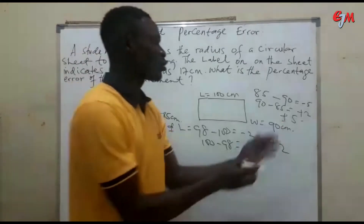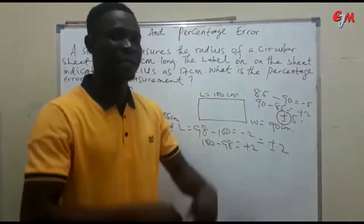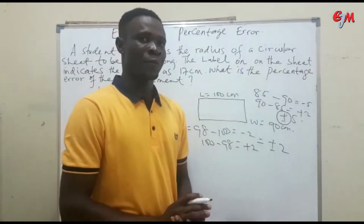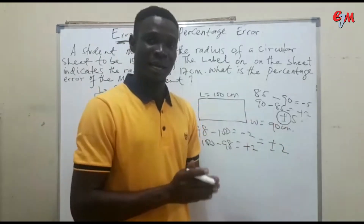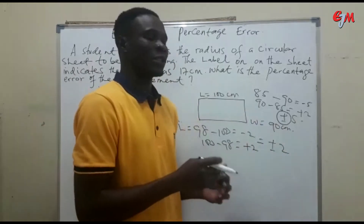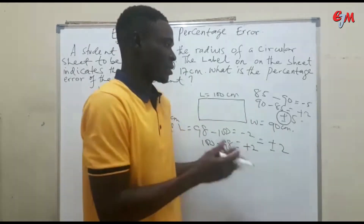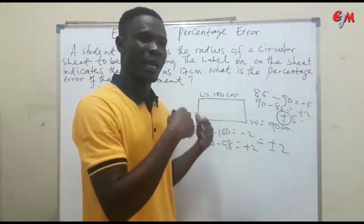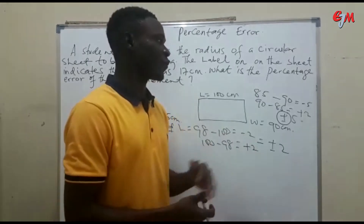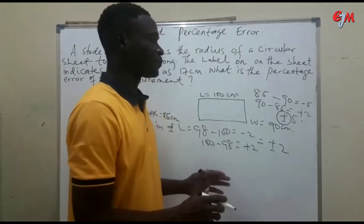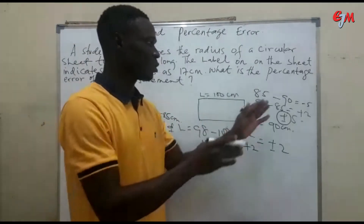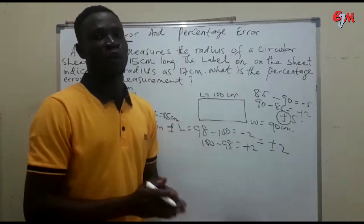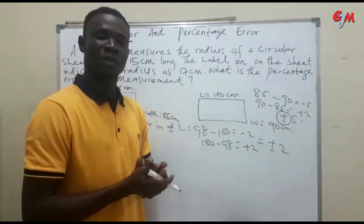Our concern now is not whether this is plus or minus — our concern is the amount of error made in the measurement. The sign is important in science, particularly in chemistry or physics, but it is not necessarily needed in mathematics. For this tutorial, we are going to introduce the absolute value to take care of the minus sign.